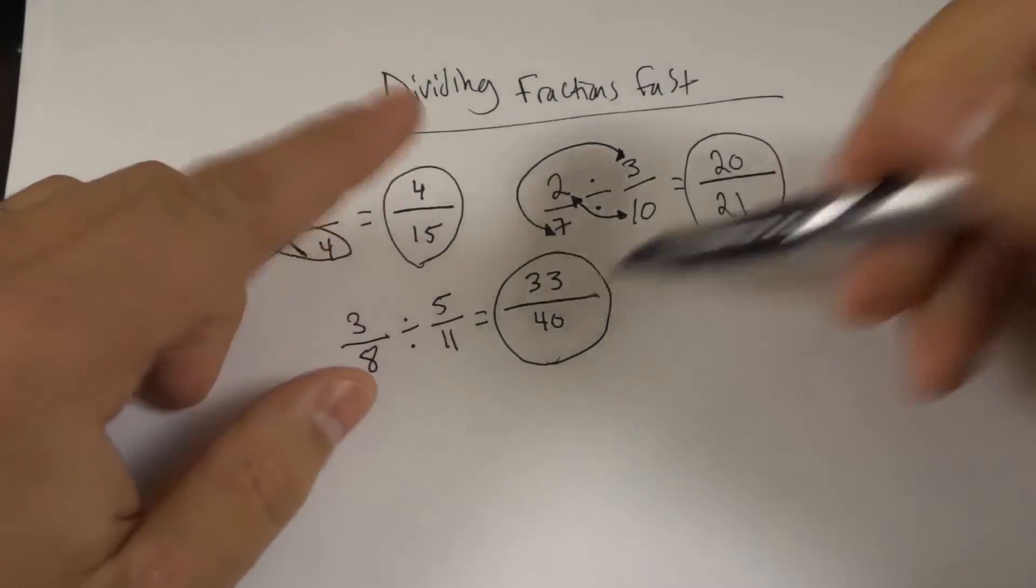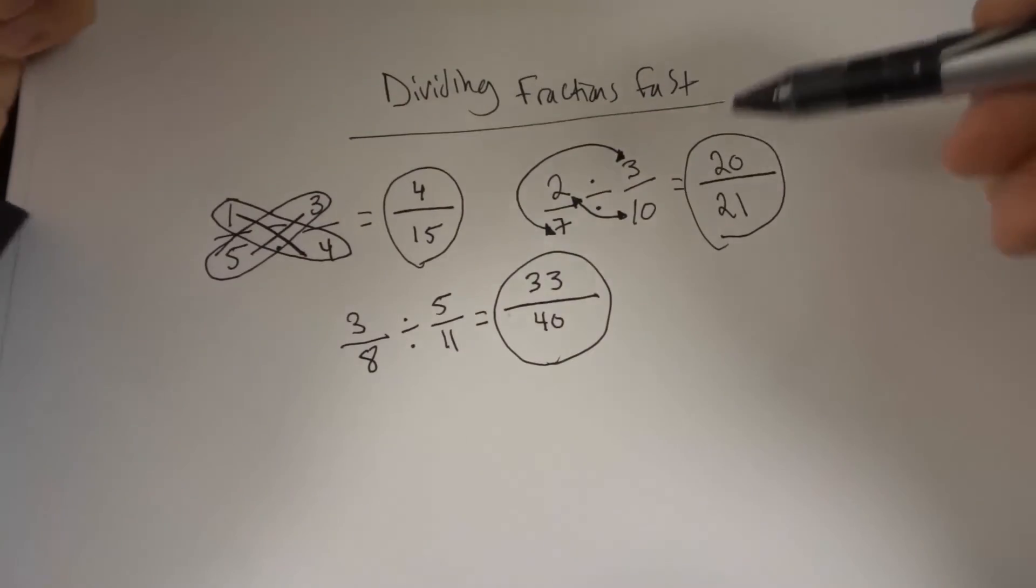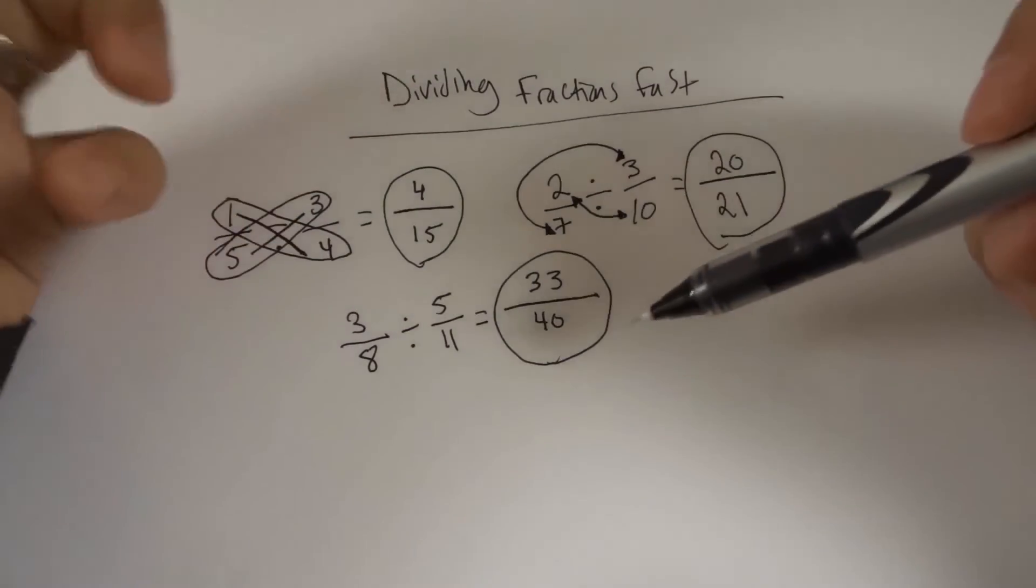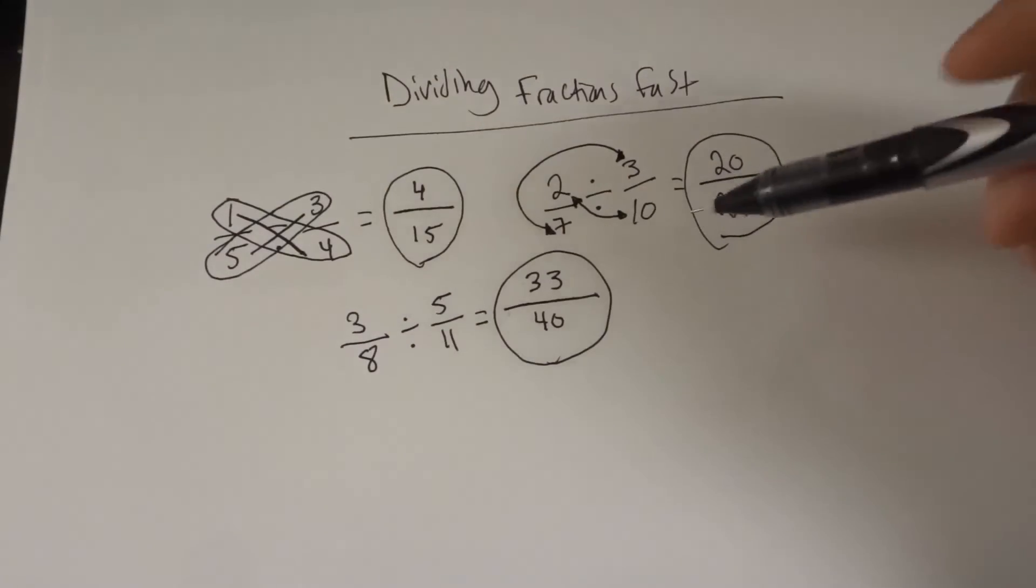33 over 40. And what you could do is, if you could reduce any of these fractions, the answer fractions, then at that point you could actually reduce them if you wanted to. It's all completely up to you. But that's basically it.